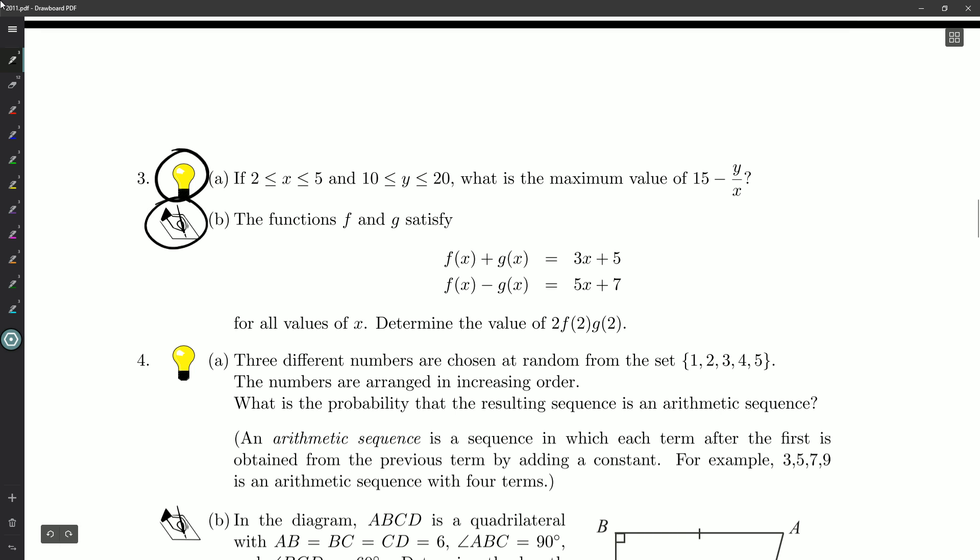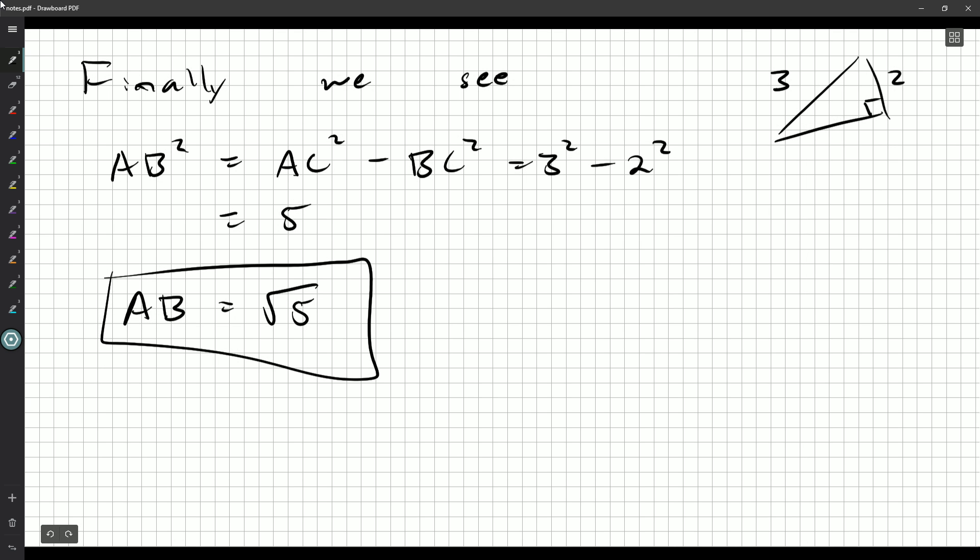So A, if X is between 2 and 5 inclusive, and Y is between 10 and 20 inclusive, what is the maximum value of 15 minus Y over X? Okay, so you can't really do anything about the 15. You're always going to have the 15 there.